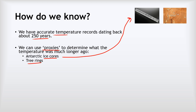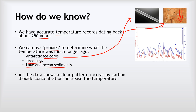We can also analyse tree rings — each ring in a slice through a tree trunk is a year of growth and its thickness corresponds to the temperature when it formed. We can reconstruct about 5000 years of the earth's temperatures this way, showing very similar patterns to the Antarctic ice core data. Sediments that sink to the bottom of oceans and lakes can also tell us temperatures when they formed. Combining all this data gives a graph showing a very clear pattern: increases in carbon dioxide concentrations increase the temperature.